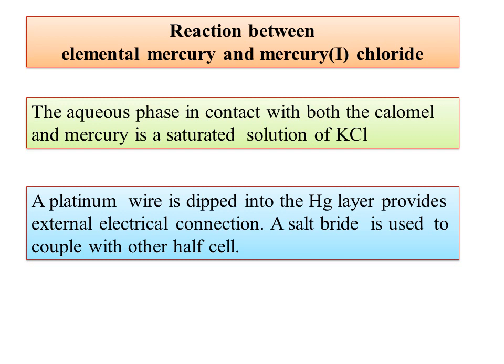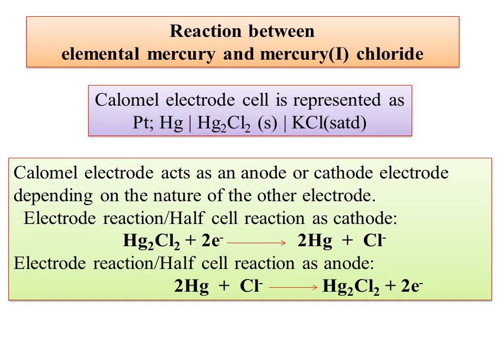The reaction involves elementary mercury and mercurous chloride. The calomel electrode representation uses platinum wire connected externally, with mercury and mercurous chloride in solid state, and a saturated KCl aqueous solution. A salt bridge is used to connect both half cells.